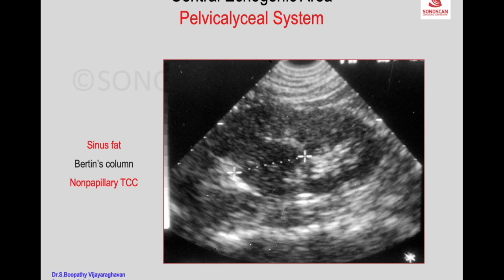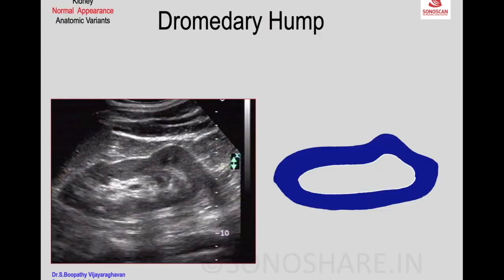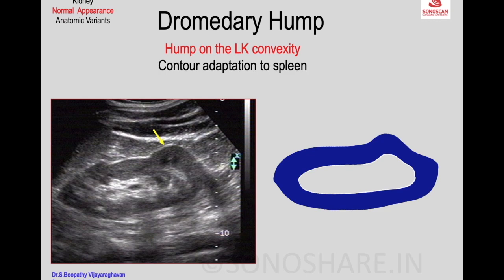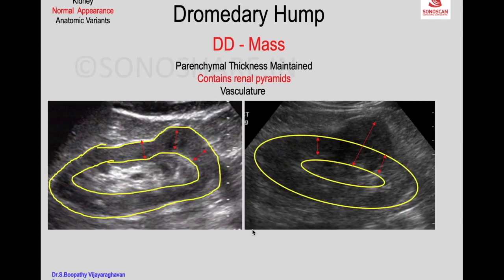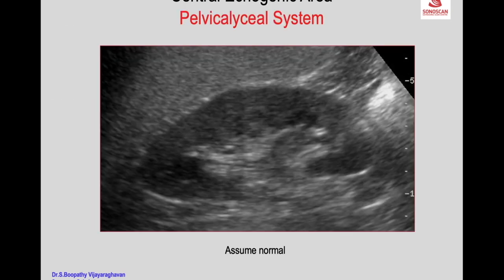Another normal variation is the dromedary hump — a hump on the left kidney convexity representing a contour adaptation to the spleen. The differential diagnosis is a mass. Differentiation: in a dromedary hump the parenchymal thickness is maintained and normal renal pyramids are contained within it, whereas if it is a mass, pyramids will be absent and vasculature will be splayed. On imaging, normal pyramids are seen in the hump while they are absent in the mass.